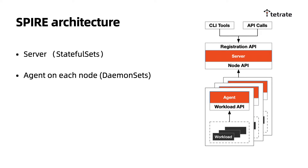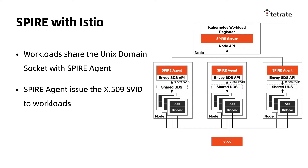This diagram shows the architecture of Spire, with a server and an agent installed on each worker node. We can deploy them into a Kubernetes cluster as a DaemonSet and deployment. The workload requests an identity from the workload API in the agent, and all identity requests are sent to the server. We can also use command line tools or REST API to send API requests directly to the server.